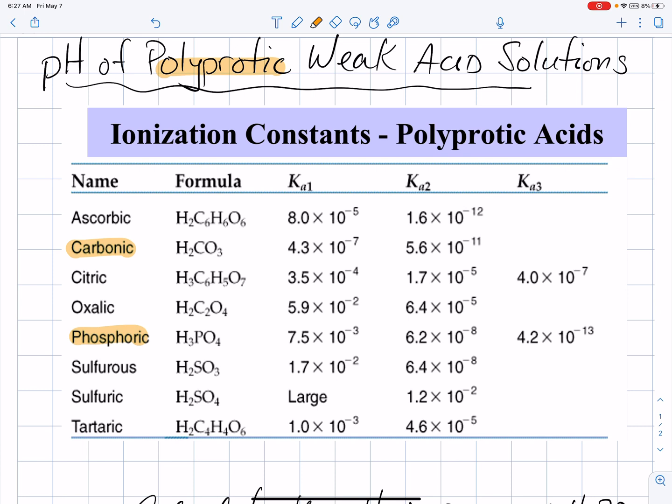Now, in this table, you'll also see sulfuric acid, but sulfuric acid is not a weak acid. The first step of its ionization has a large Ka value, and the second step has a weak ionization.